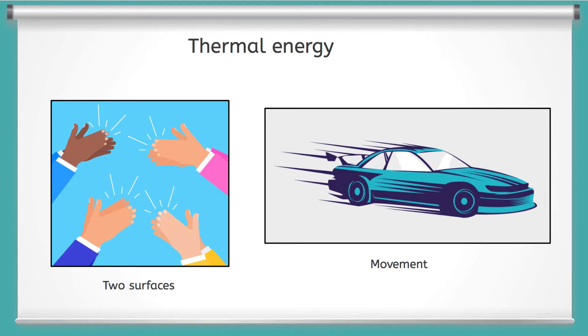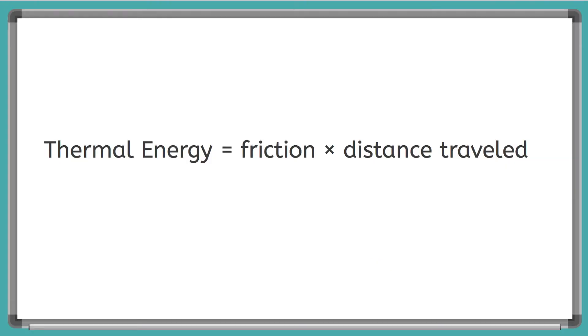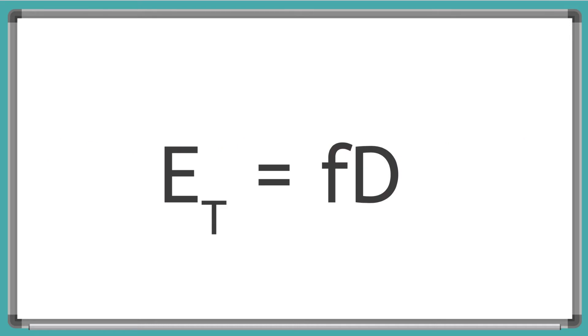So the equation for thermal energy is thermal energy equals friction times the distance traveled. And again, using algebra, we can use those variables to rewrite this equation to look like ET equals lowercase f times D.